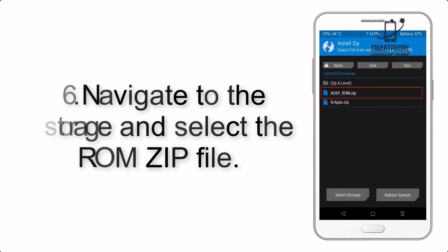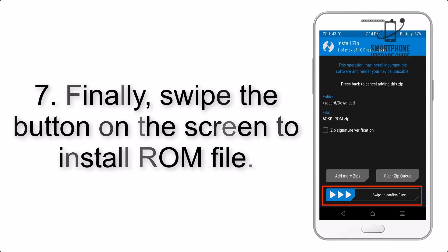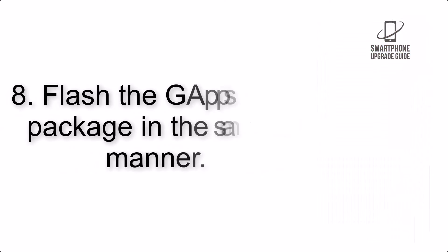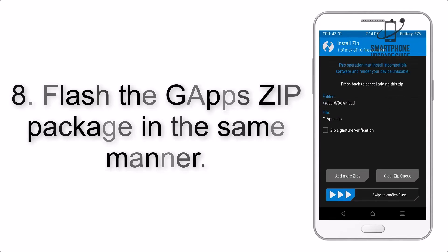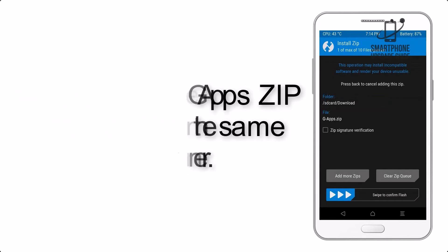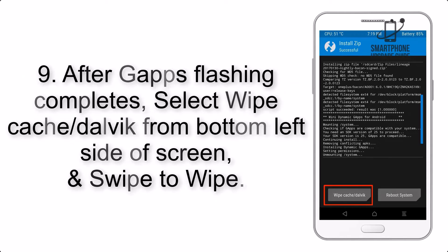Step 6: Navigate to the storage and select the ROM zip file. Step 7: Finally, swipe the button on the screen to install the ROM file. Step 8: Flash the GApps zip package in the same manner.